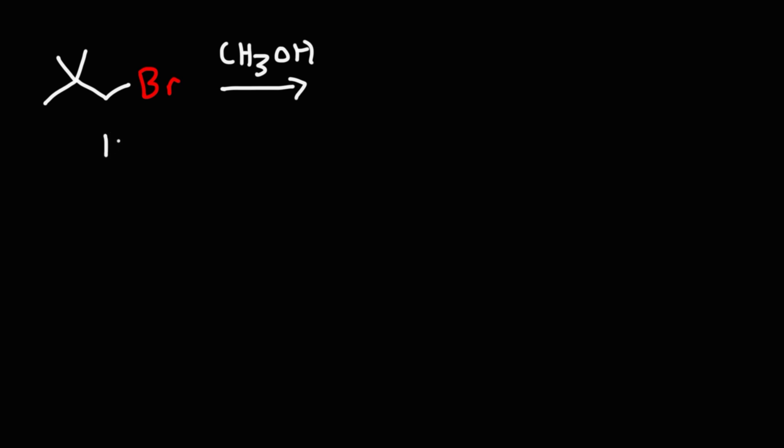Now if we look at the substrate, we have a primary alkyl halide. The carbon atom that bears the bromine is attached to one other carbon atom. Primary alkyl halides typically favor SN2 reactions. Now we do have a protic solvent which favors SN1 reactions. So what would you say? Is this an SN1 reaction or an SN2 reaction?